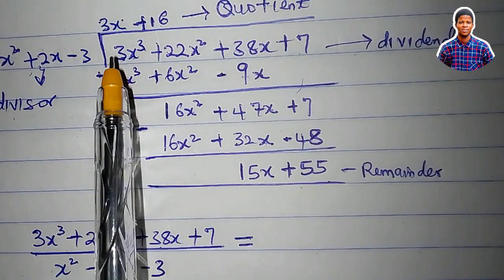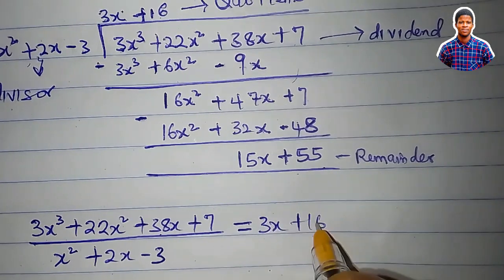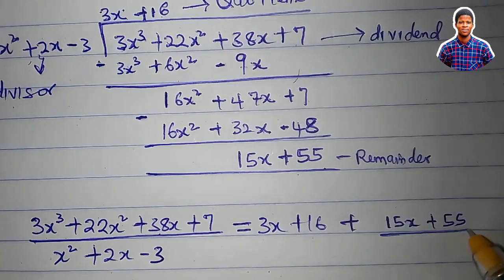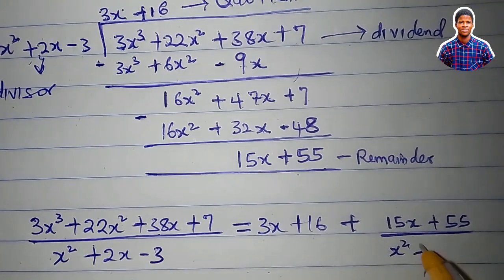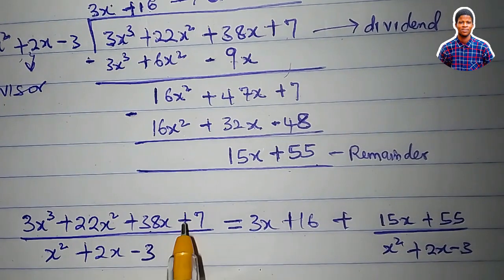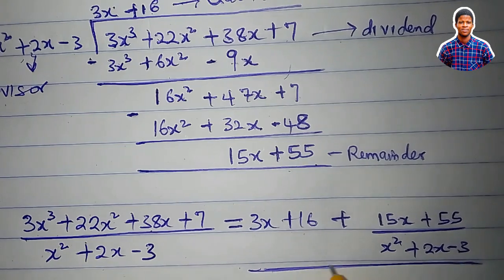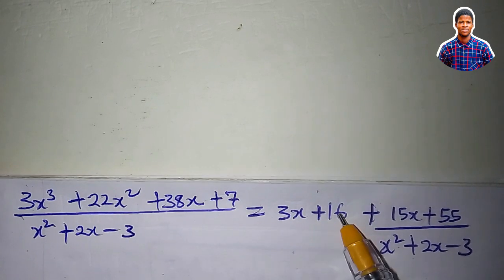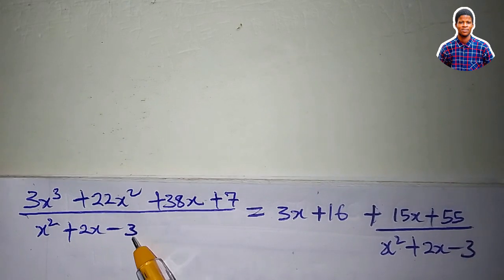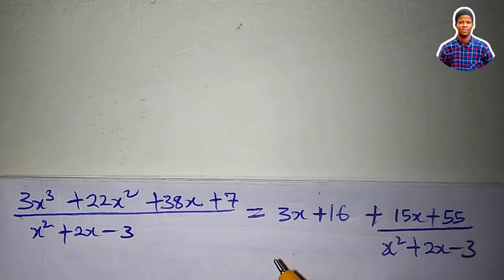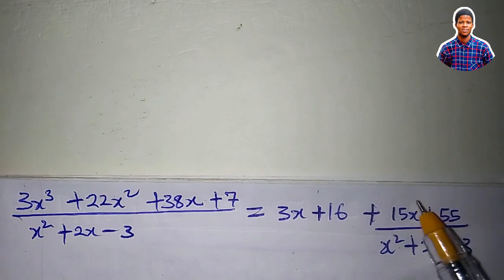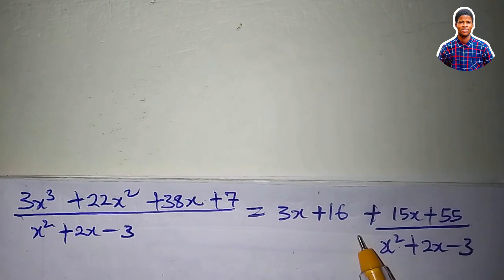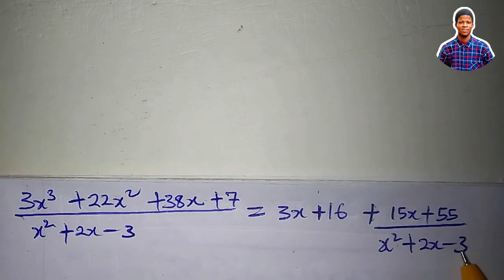The answer will be: quotient plus remainder over divisor. The quotient is 3x plus 16, so the expression equals 3x plus 16 plus the remainder, which is 15x plus 55, divided by the divisor x squared plus 2x minus 3. So the original expression on the left-hand side is equal to what we have on the right-hand side. It is this proper fraction — 15x plus 55 over x squared plus 2x minus 3 — that we are now going to resolve into partial fractions.